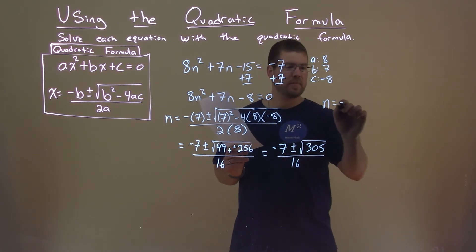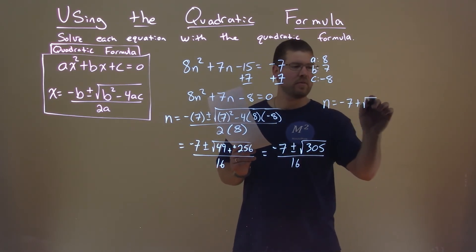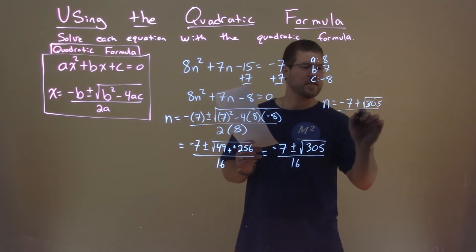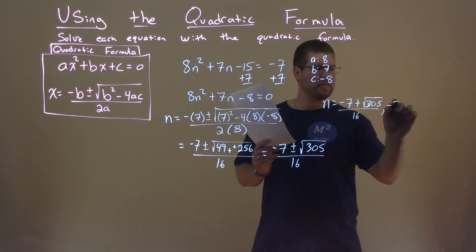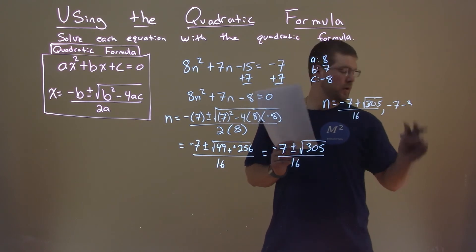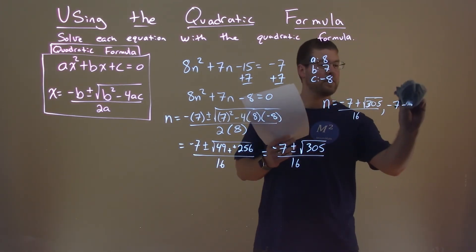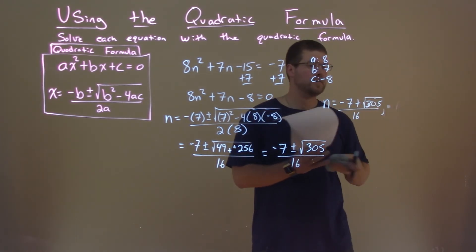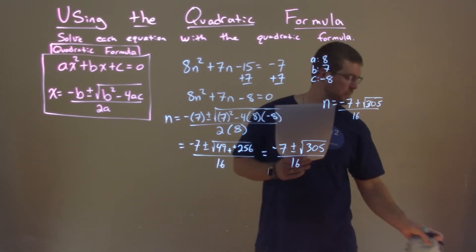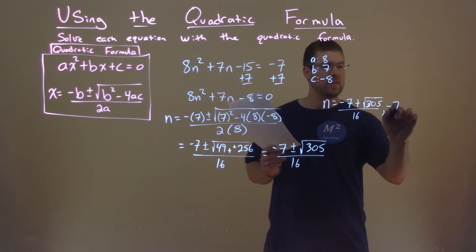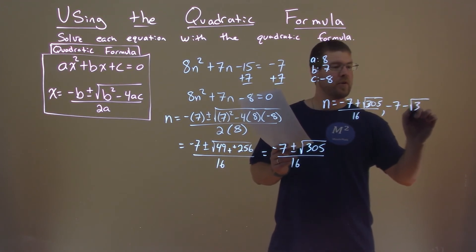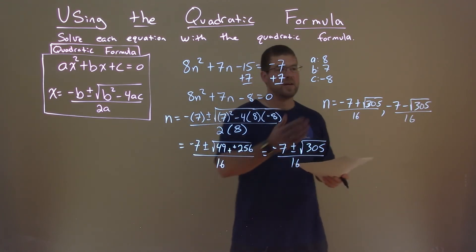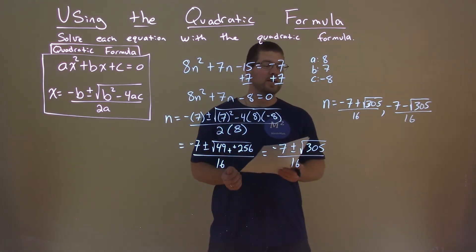We can write it separated. Negative 7 plus square root of 305 over 16, and negative 7 minus square root of 305 over 16. So these two right here are our final answer.